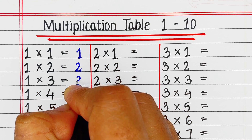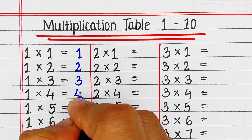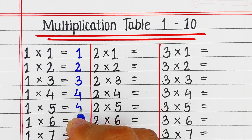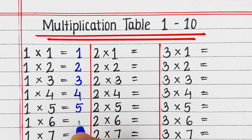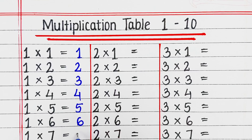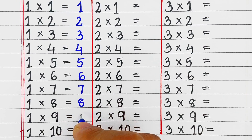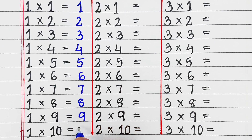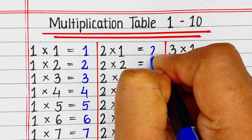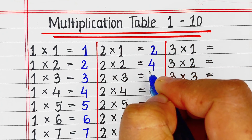First is table of 1. 1 one is 1, 1 two is 2, 1 three is 3, 1 four is 4, 1 five is 5, 1 six is 6, 1 seven is 7, 1 eight is 8, 1 nine is 9, 1 ten is 10.